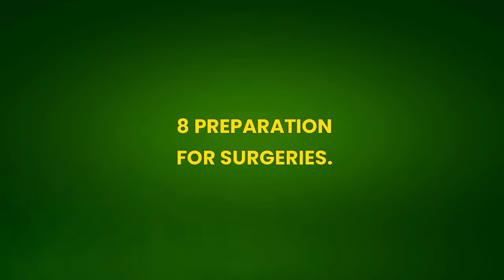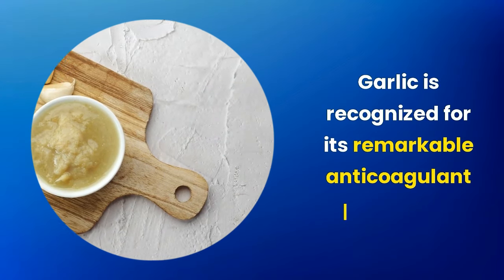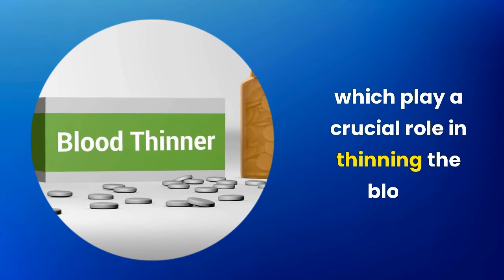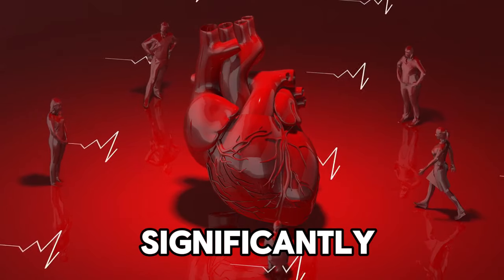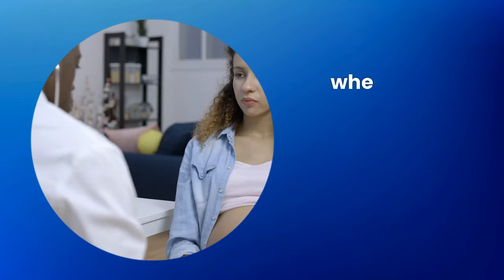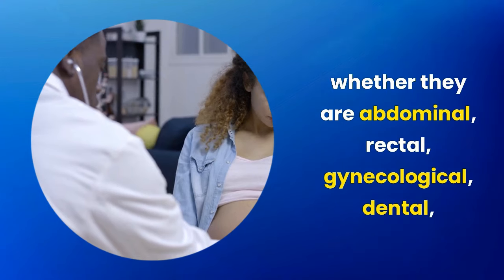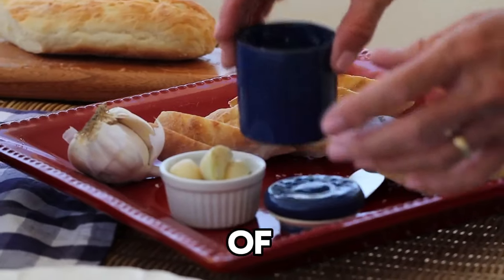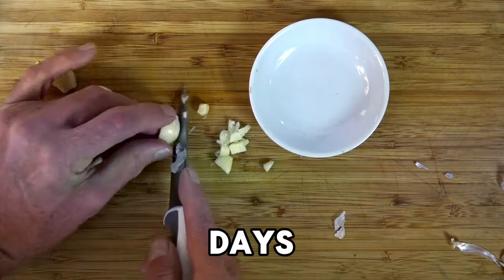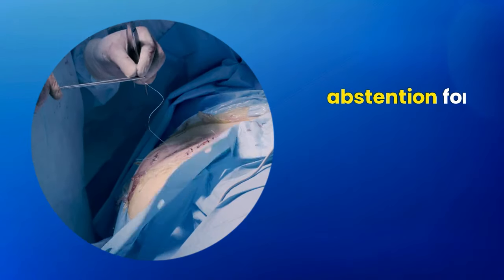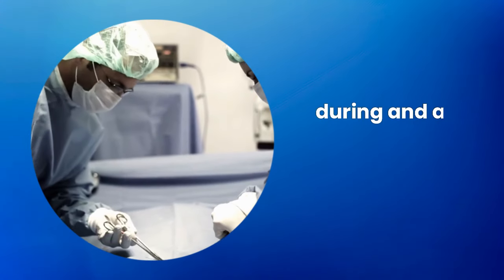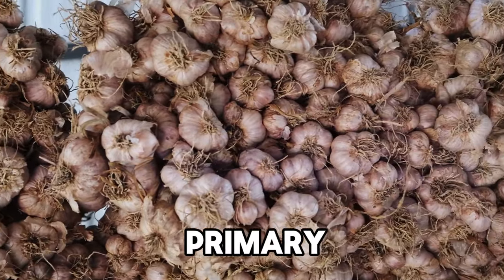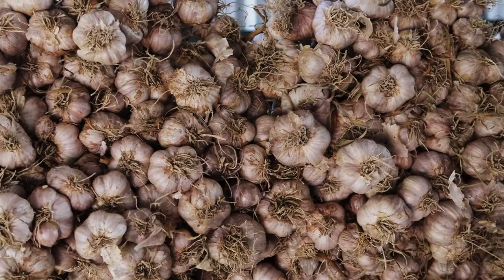8. Preparation for surgeries. Garlic is recognized for its remarkable anticoagulant properties, which play a crucial role in thinning the blood. This characteristic, often described in popular language as making the blood more thin, implies that garlic consumption can significantly increase the risk of bleeding. This property is particularly relevant when considering surgical procedures, whether they are abdominal, rectal, gynecological, dental, or even neurosurgical. In view of this, it is strongly advisable to stop using garlic seven days before any planned operation and continue this abstention for another seven days after the surgery. The importance of this precaution lies in the fact that, during and after surgical procedures, the risk of excessive bleeding is a primary concern and the anticoagulant properties of garlic can exacerbate this risk.